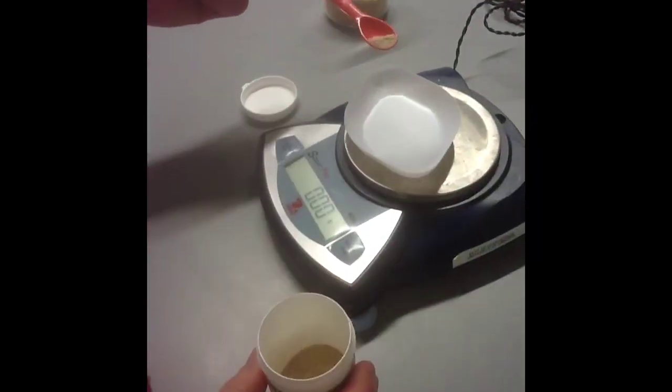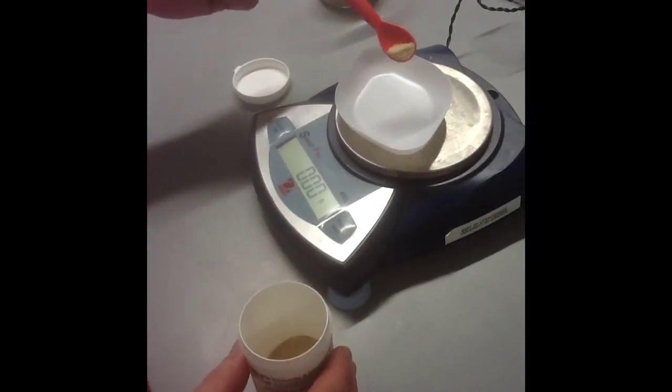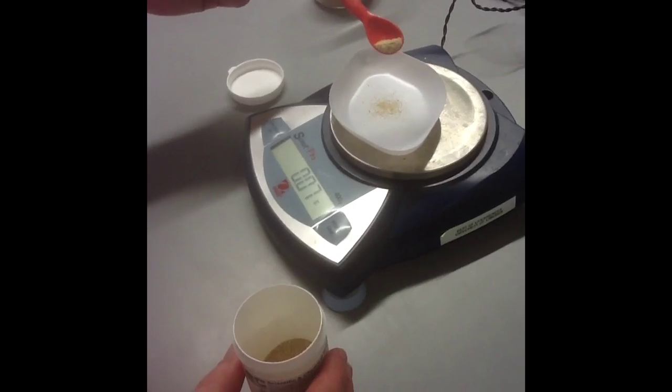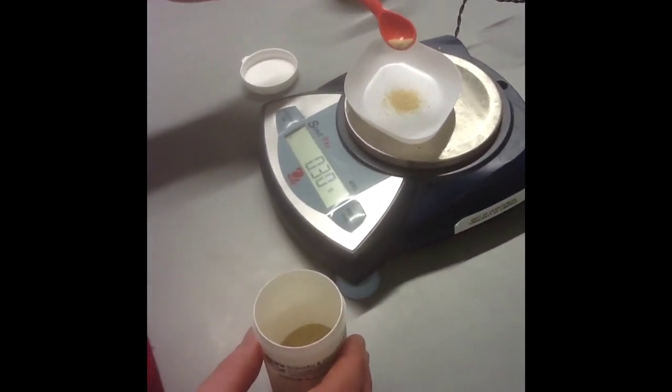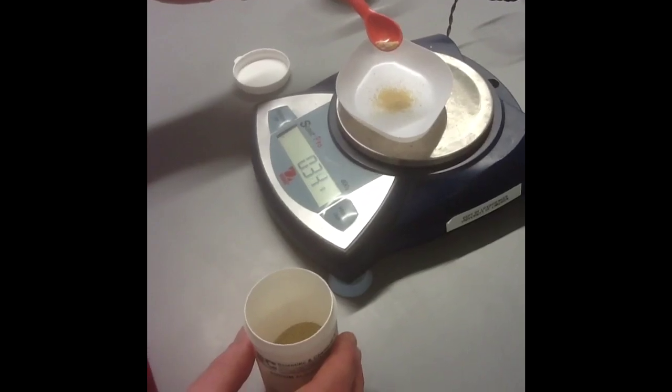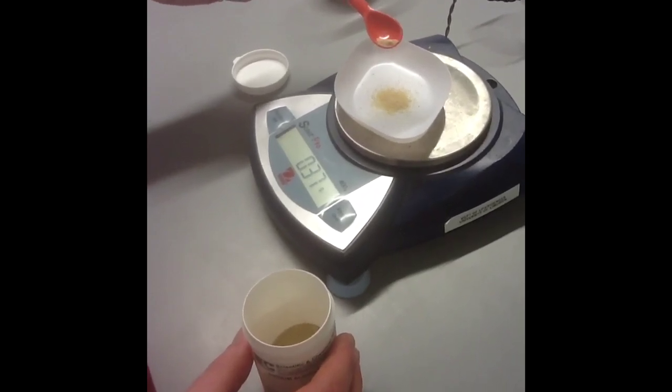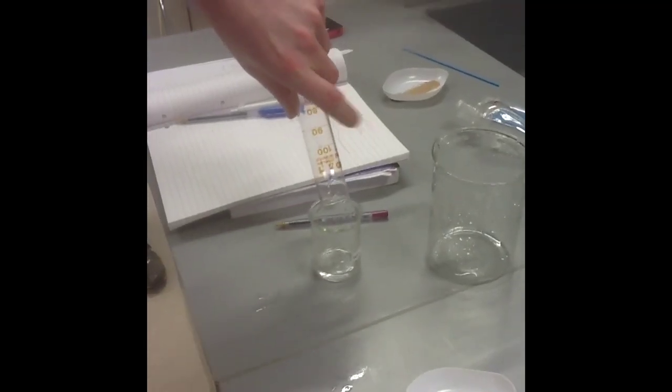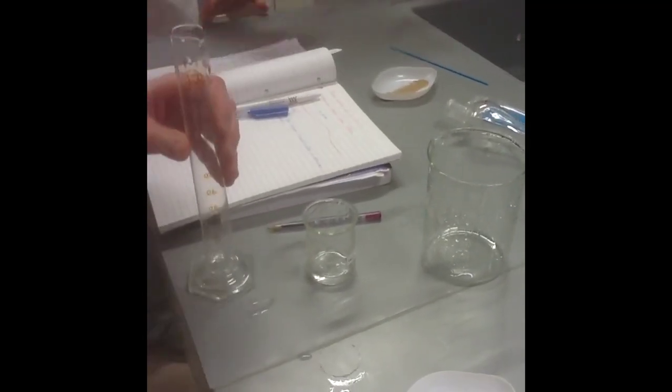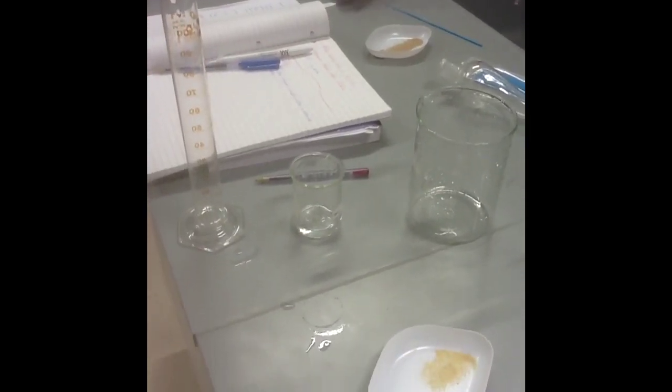The first step is to weigh out 0.4 grams of sodium alginate. Watch out, this might be tricky. Almost there. Boom. Then add the sodium alginate to 10ml of distilled water in a 100ml beaker. Make sure to stir well.